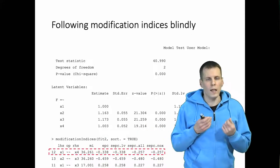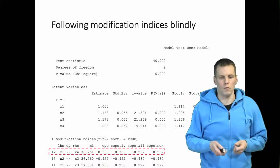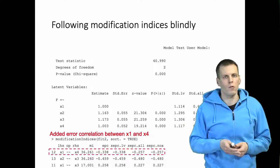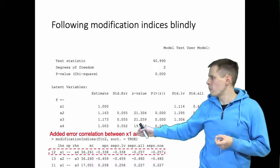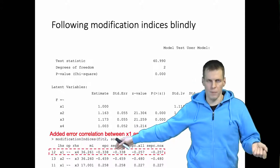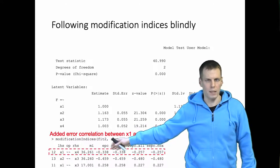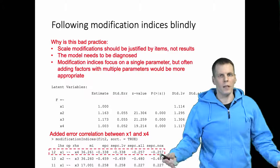So that is bad practice for a couple of reasons. Quite often we would add an error correlation between the variables indicated, and we wouldn't even be looking at what is the expected parameter change and try to think if that makes sense. And well, that's bad practice.